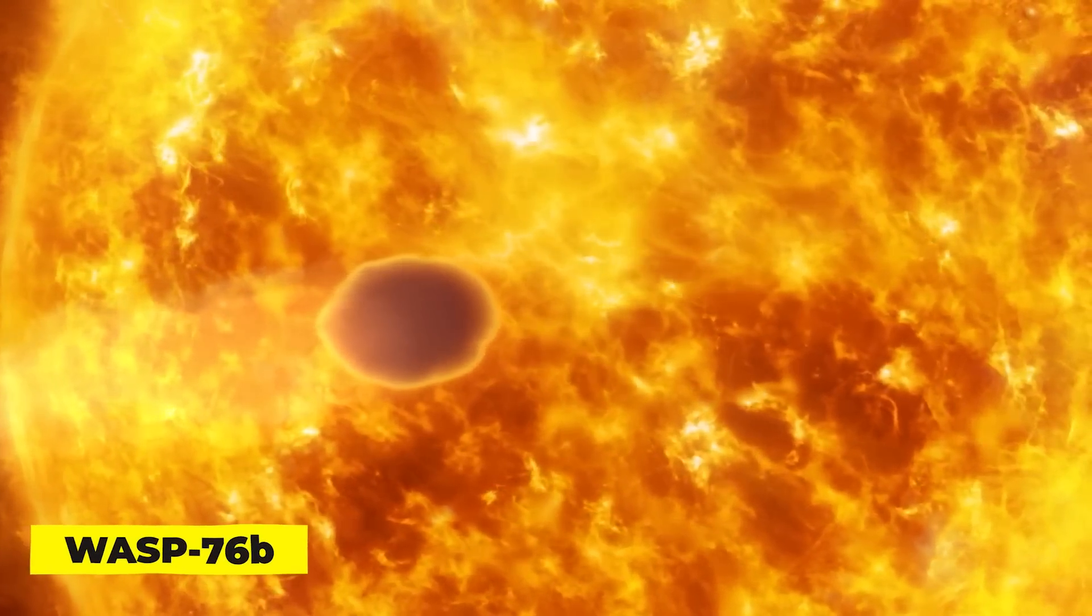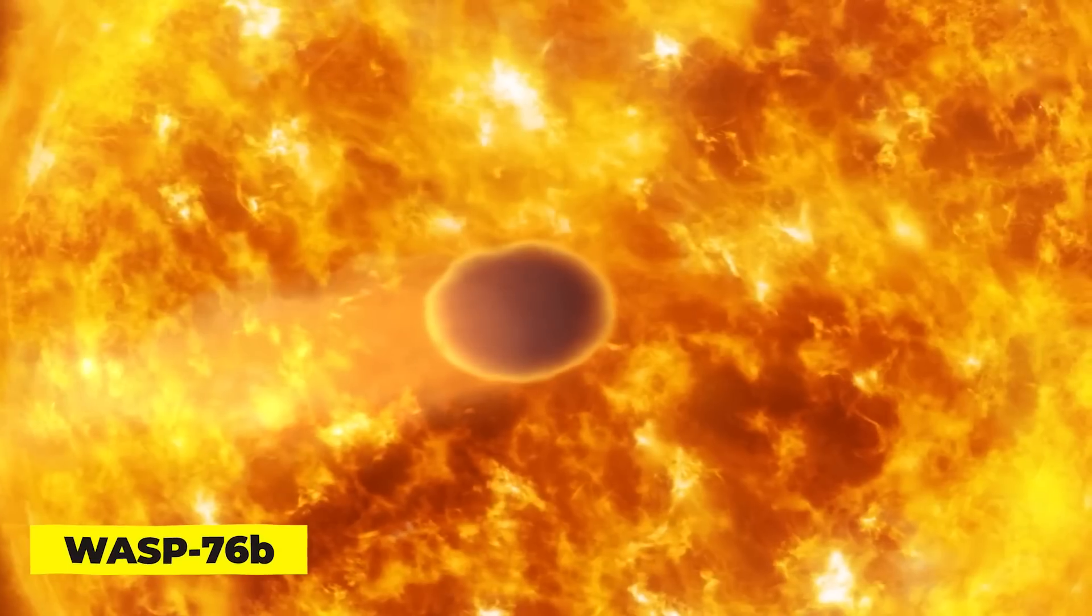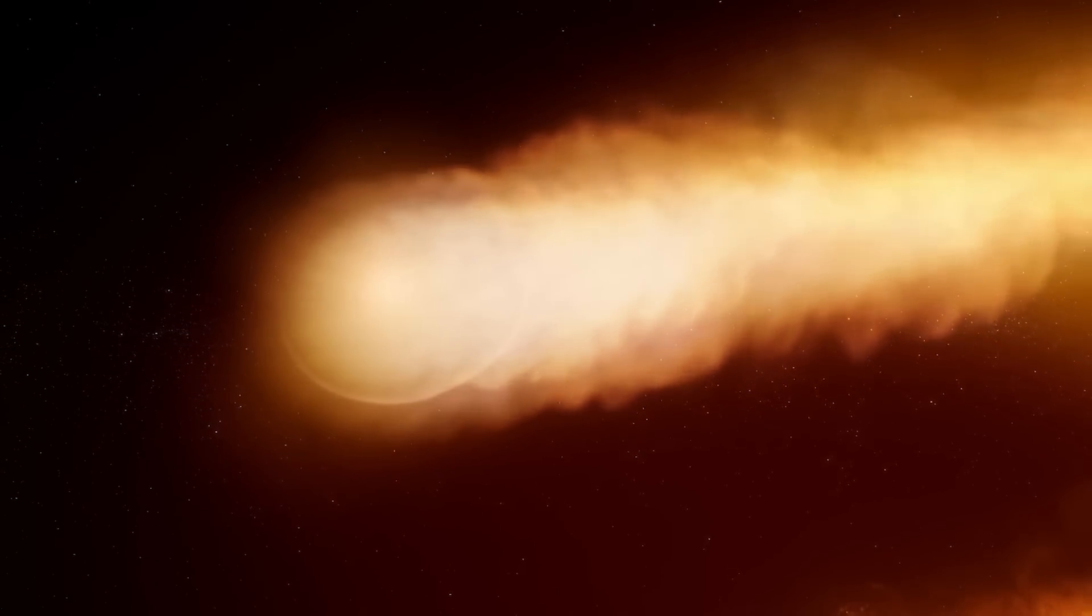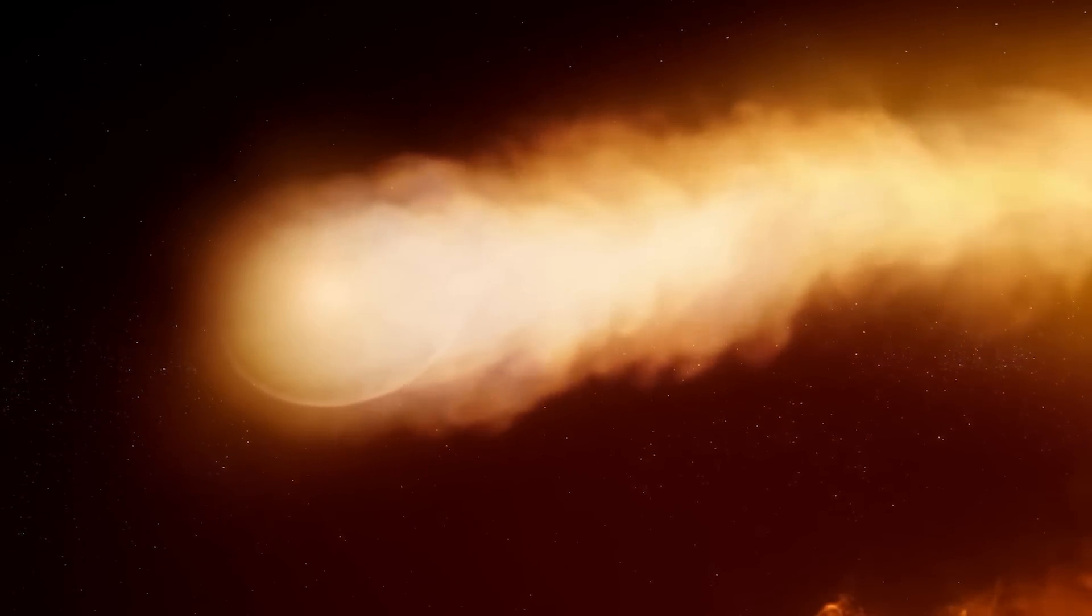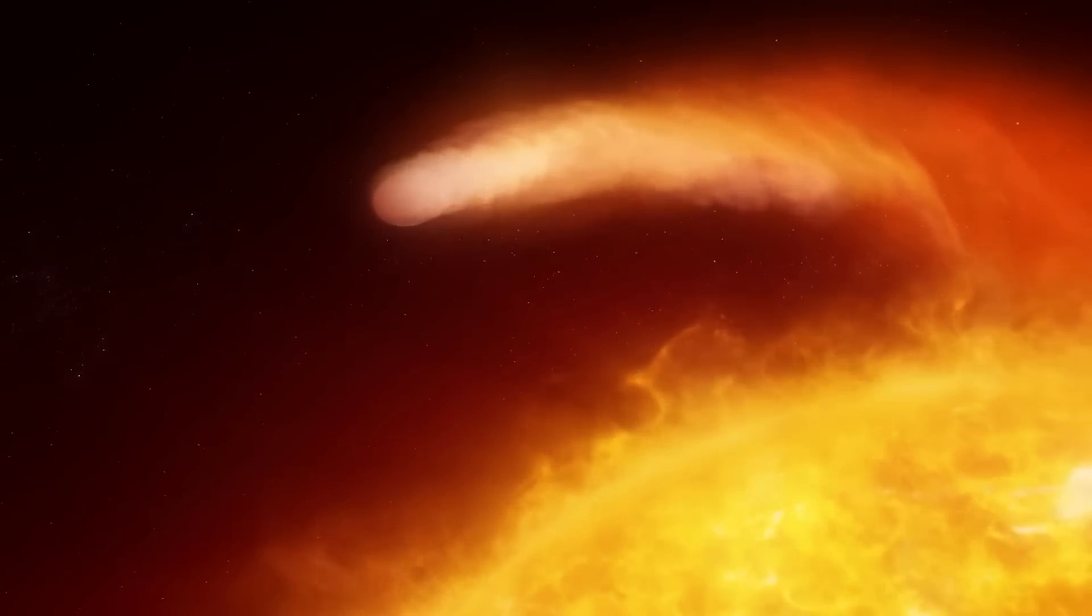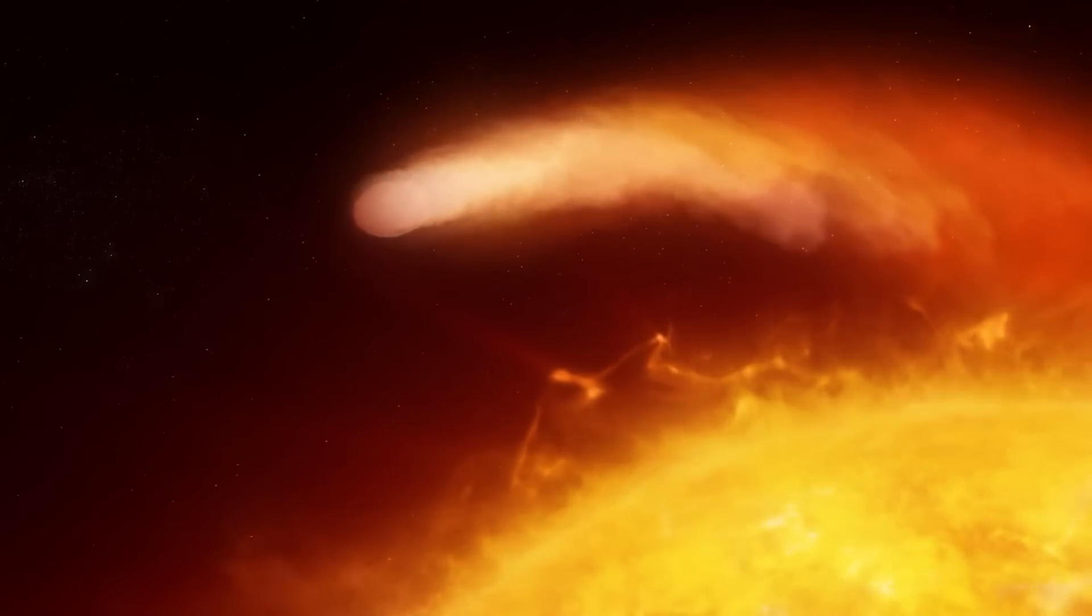WASP-76b is the name of yet another scorching exoplanet that is around 640 light-years from Earth. The planet is recognized for more than just that, though. Additionally, it possesses molten iron rains and a constant dark side. It was found in 2016, and it is almost as big as Jupiter.